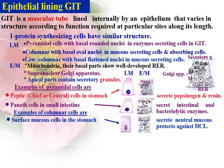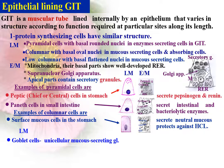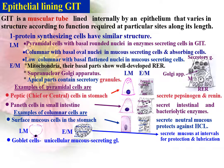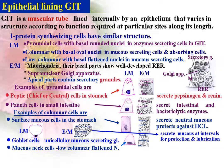Goblet cells are also an example of columnar cells. They are cylindrical with an oval, darkly stained nucleus, and their apical part is distended with mucus. They secrete mucus at intervals for protection and lubrication. An example of low-columnar cells with flattened nuclei are mucous neck cells, located in the neck of the gastric glands. They are low-columnar with pale cytoplasm and flattened nuclei, and they secrete an acidic mucus.